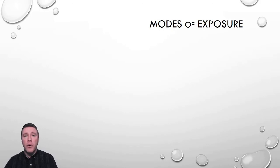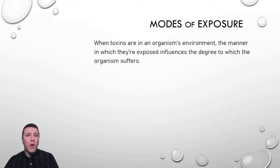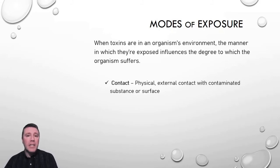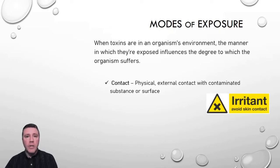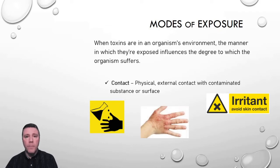When a toxin is present in an organism's environment, there are different ways in which that organism may interact with it. While not all toxins are equally dangerous, generally the mode of exposure is determinative in how much harm is caused. The first and typically least dangerous is contact — this occurs when there is direct physical contact between a toxin or contaminated surface and the organism's outer surface, such as skin or scales. Depending on the duration of contact, the type of toxin, and the concentration, effects may range from temporary to permanent damage.